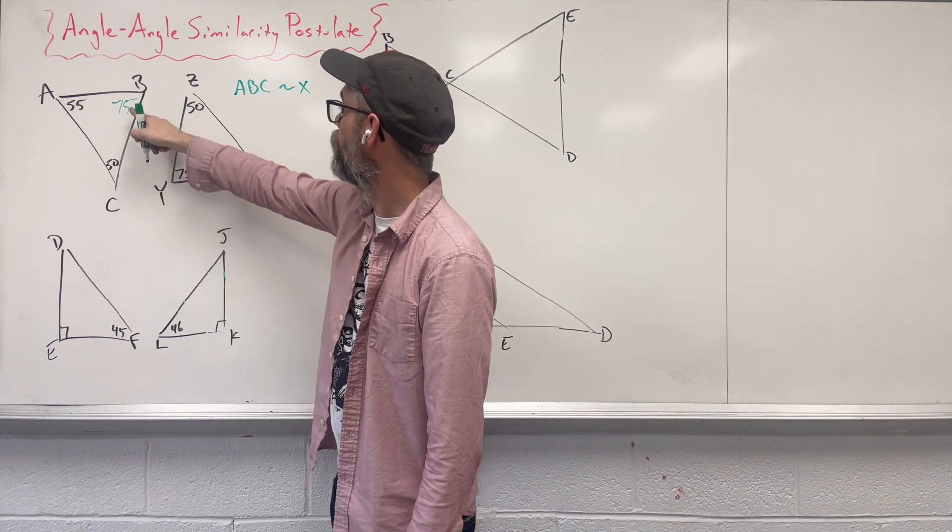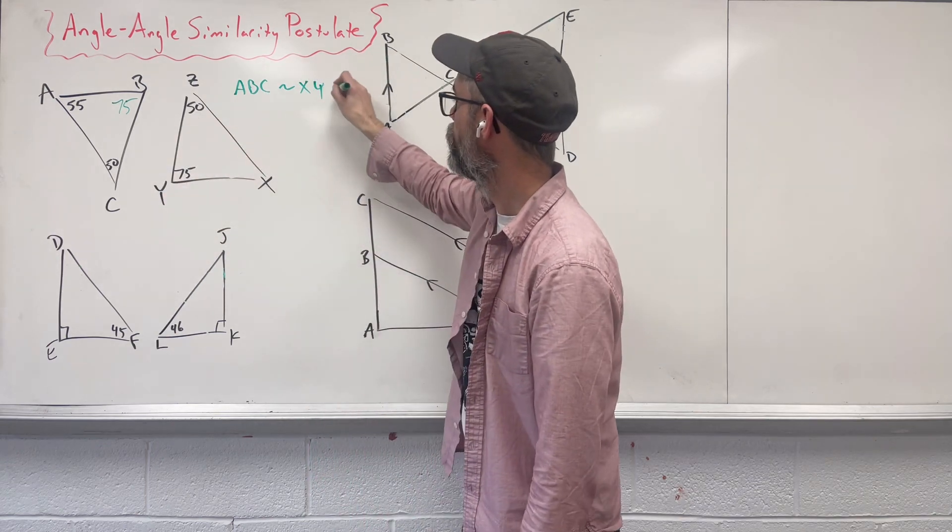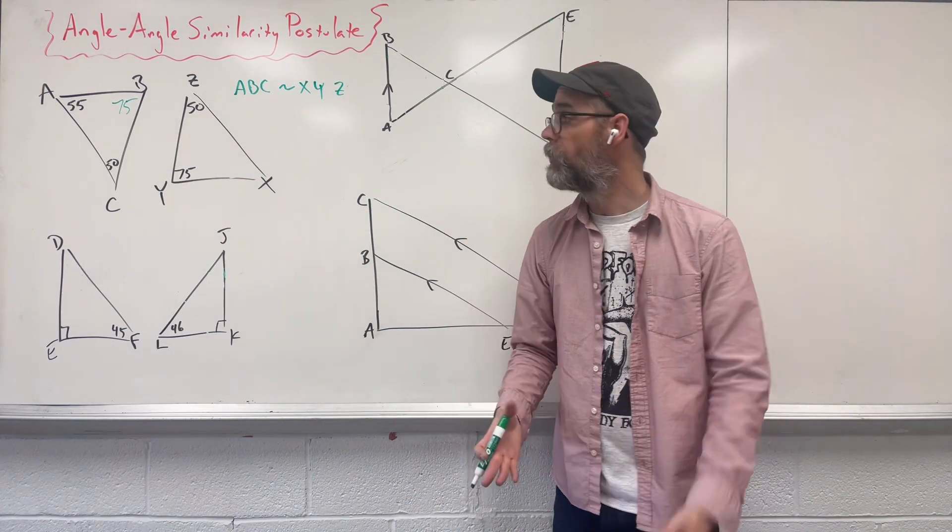B is 75, that's Y. And C is 50, which is Z. I know that those two triangles have to be the same.